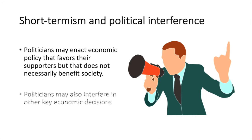Political interference occurs when politicians interfere in key economic decisions. For example, a US president might pressure science agencies to alter their recommendations or reporting to support their political agenda, influencing how and what information is shared with the public.